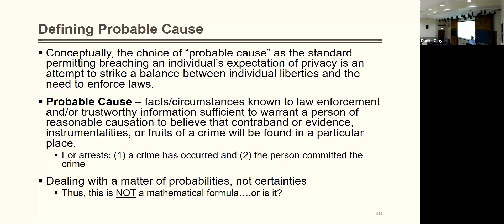An instrumentality is something used in the commission of a crime to further it. For example, if you rob a bank with a gun, the gun is your instrumentality — it's the means to an end. Fruits of the crime are the results — if you robbed the bank with the gun and left with a bag full of cash, that cash is the fruits of the crime. If we have probable cause to believe fruits of a crime are in someone's house, we can bypass the expectation of privacy — generally with a warrant.